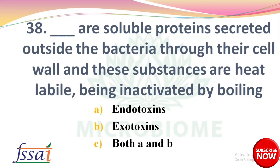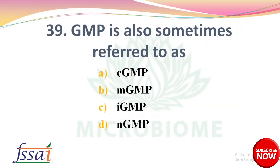Next: Dash are soluble proteins secreted outside the bacteria through their cell wall, and these substances are heat-labile, being inactivated by boiling — options: endotoxins, exotoxins, both A and B. The right answer is option B, exotoxins. Next question: GMP is also sometimes referred to as — options: C-GMP, M-GMP, I-GMP, N-GMP. The right answer is option A, C-GMP, that is current good manufacturing practices.